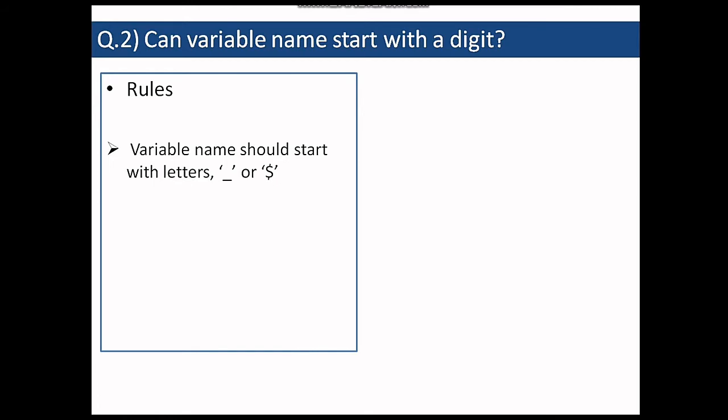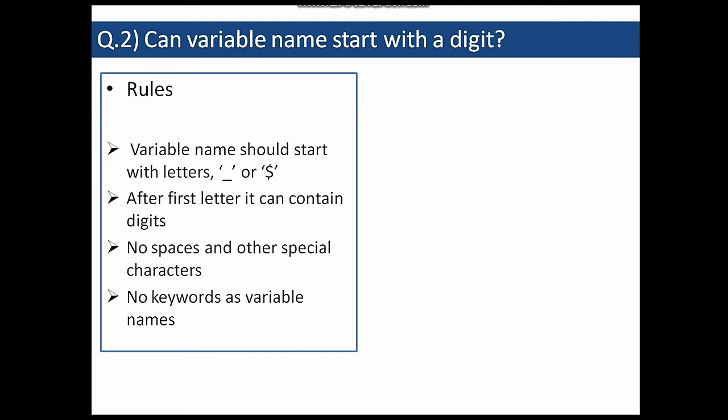Then after the first letter it can contain digits. So anything like number one, number two is valid. No spaces and other special characters are allowed in the variable name. And also keywords of Java are not allowed as a variable name. So there are some predefined keywords in Java which are used for other purposes like int, new, double, float, etc. You cannot use these keywords as the variable name.